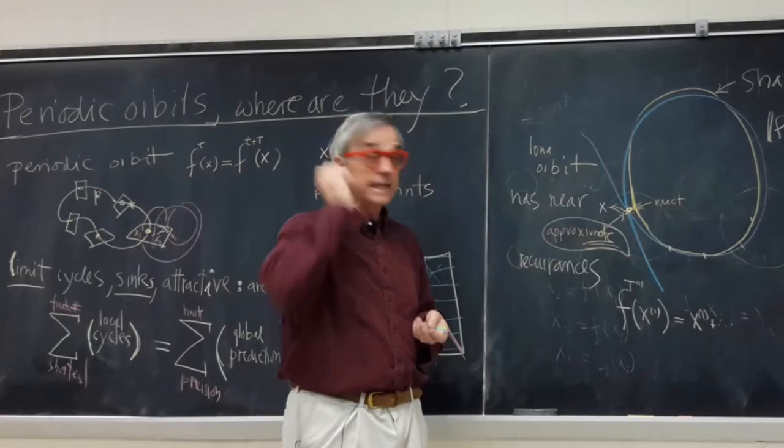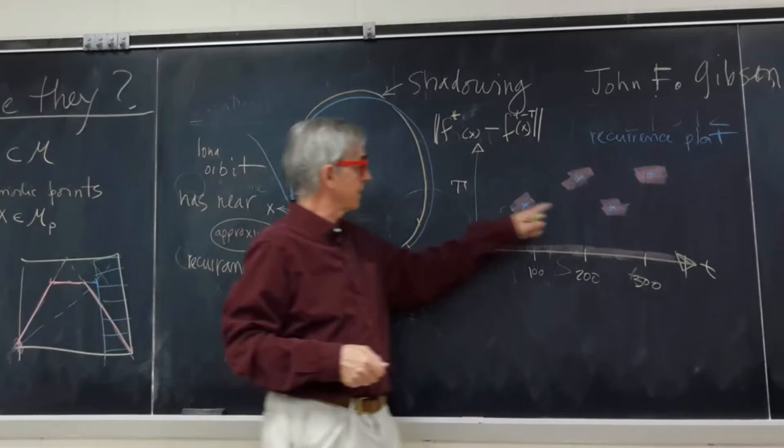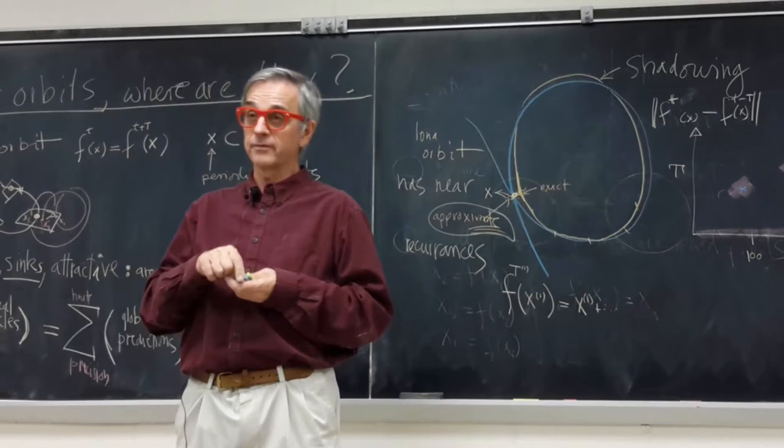Then he types it in, he proves it in typing. Then he puts in the starting guesses from this plot and he gets three periodic orbits, first time, basically in 150 years.